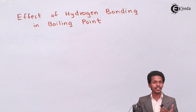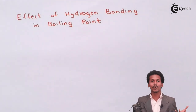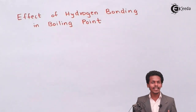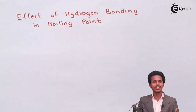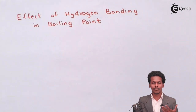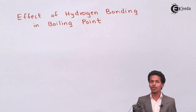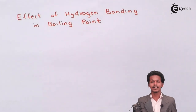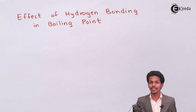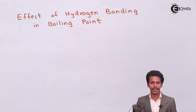This hydrogen bonding can also give rise to an effect on boiling point. For example, as we know that hydrogen bonding is present in the water molecule, and the water molecule has a boiling point that is appreciably large — that is, it is 100 degrees Celsius. Why is it so? It is because of hydrogen bonding.